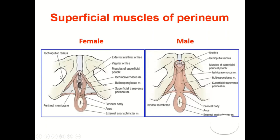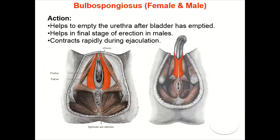Comparing superficial perineal pouch muscles in male and female: bulbospongiosus in males is a bipennate muscle covering the bulb of the penis, with two symmetrical halves united by a median raphe and no bony attachment. In females it splits into two halves to embrace the vaginal orifice and covers the bulb of the vestibule. The action in both sexes is to compress the deep dorsal vein and help erection of the penis or clitoris. In males it also expels drops of urine from the urethra and contracts repeatedly during ejaculation.